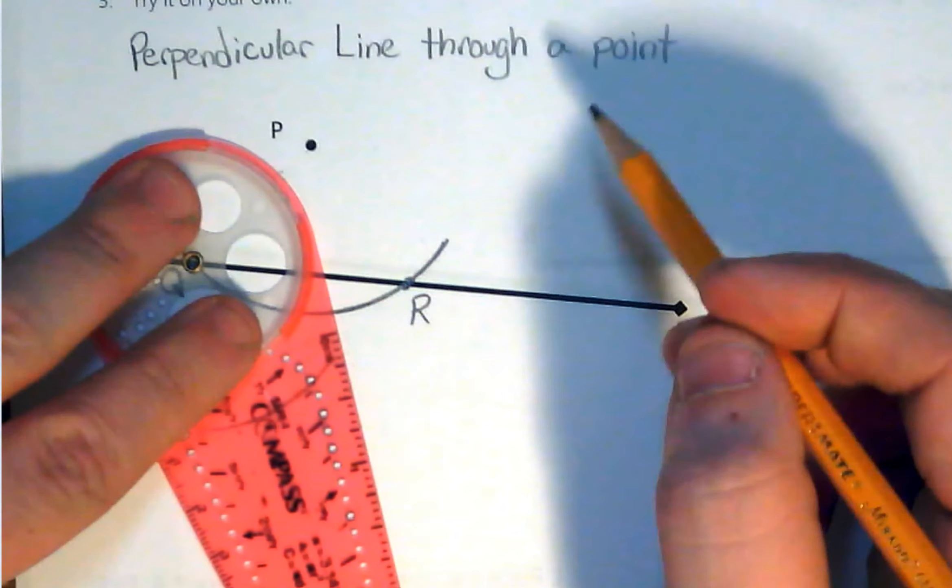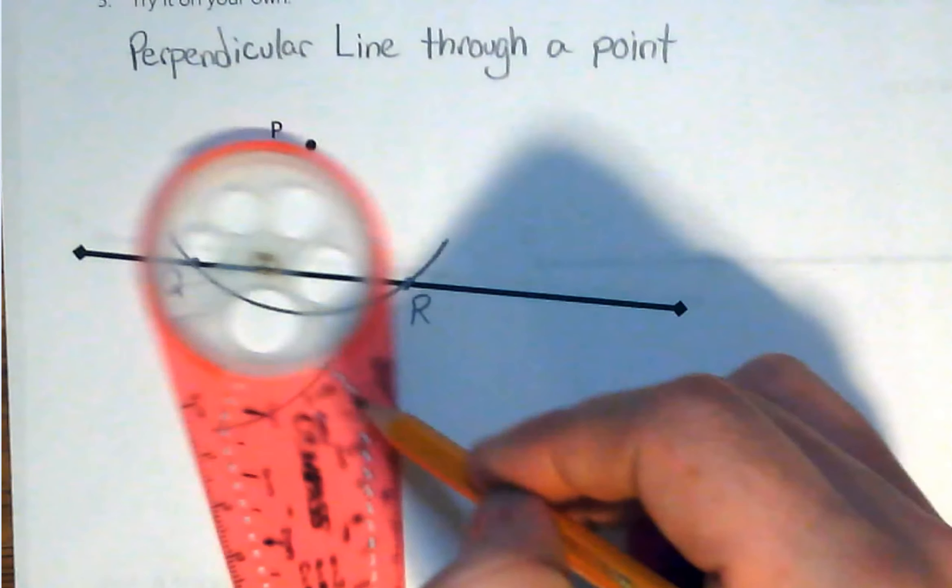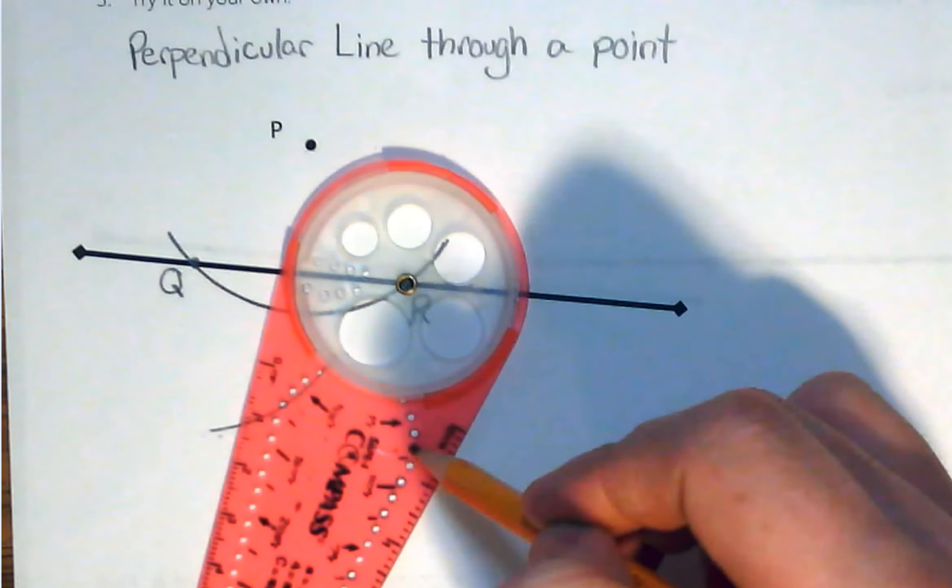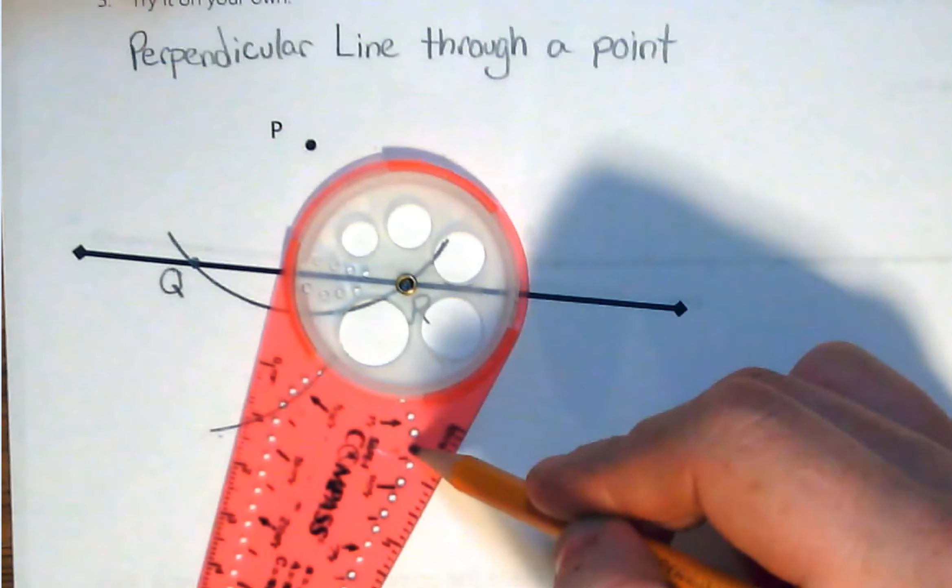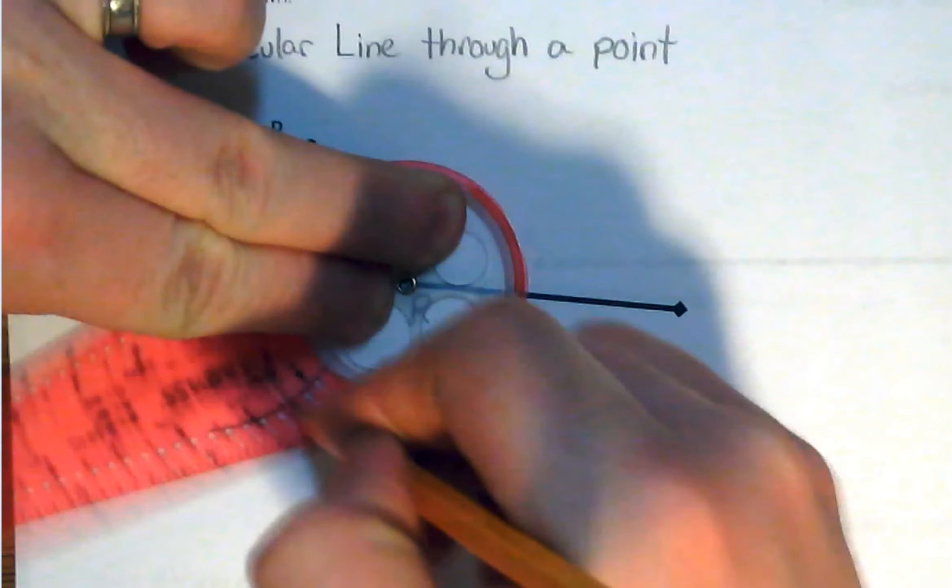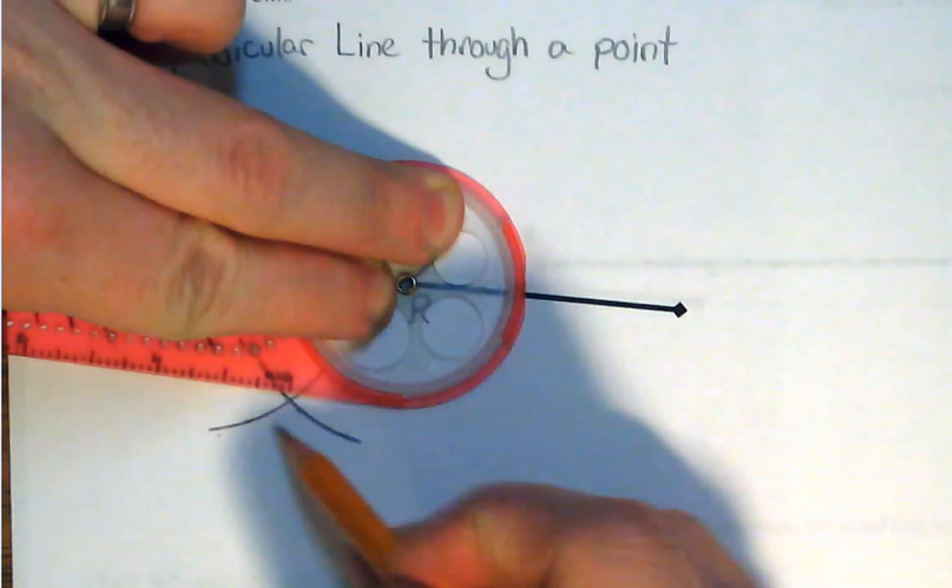Now I want to make sure I'm using the same hole. So I used the fourth hole out here. And then I'm going to take my compass center and put it on point R. So my center is on R now. And then what I'm going to do is I'm going to draw an arc that goes through that arc I just drew. Keep in mind I'm using the same hole I used to draw that arc here.